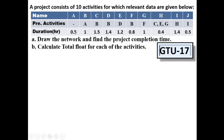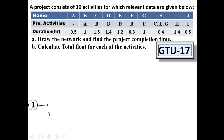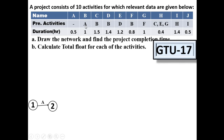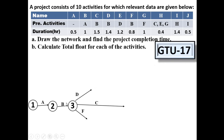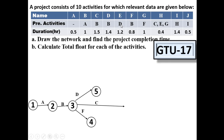We are going to find the total float for each and every activity. In the first part, we are going to draw the activity-on-arrow diagram. For activity A, no predecessor is required, so from node number 1 you can start activity A. For B, predecessor A is there — after completion of activity A, B will start. Then C will start after B, D will start after B, and E will start after D.